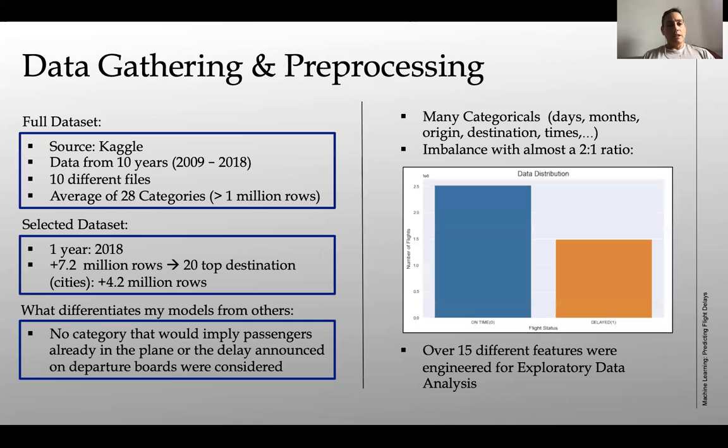In terms of the data that I use, this comes from Kaggle. It's a data set that covers 10 years from 2009 until 2018. It's divided in 10 different files, so one file per year, and it has an average of 28 categories per file with a minimum of one million rows per file. That's quite a large data set.